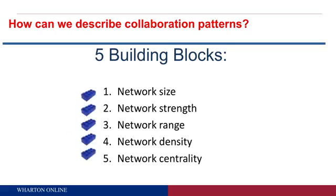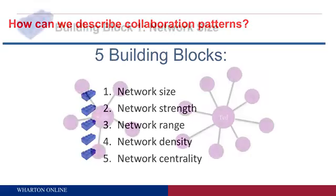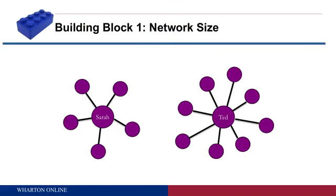Let's think about how to describe these collaboration patterns. I'm going to introduce you to five building blocks: network size, strength, range, density, and centrality. I'll use a simple network form to help you understand the basic idea behind each. Network size is very straightforward. We have two employees, Sarah and Ted. Sarah has collaborative ties with five people, while Ted has collaborative ties with eight people — so Ted has a larger network than Sarah. Generally, a larger network is probably good when your network is relatively small, giving you more information access, though if it gets really large, there are trade-offs.